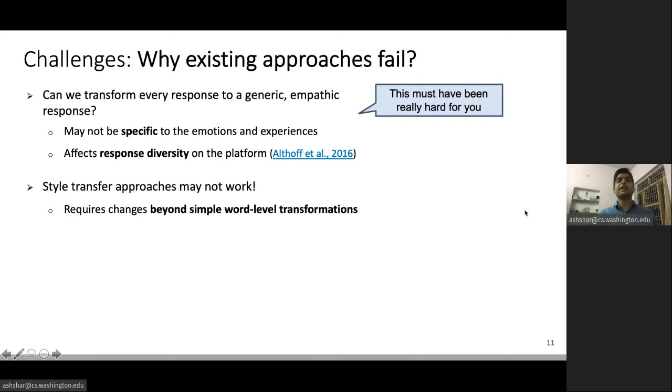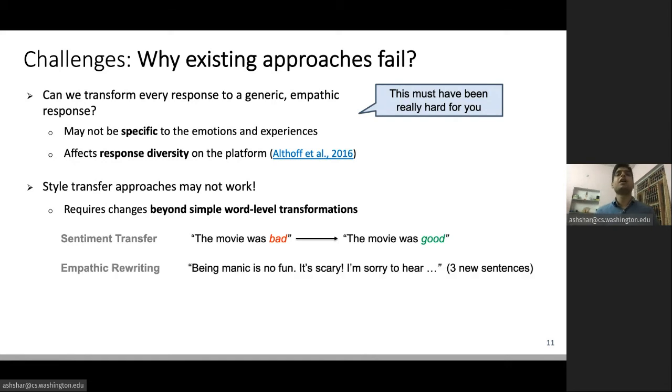Also, empathic rewriting shares surface level similarities with tasks like style transfer or sentiment transfer, but it is significantly different. Often in tasks like style transfer, making simple word level changes suffices. For example in the text 'the movie was bad,' if you just change bad to good, the sentiment changes from negative to positive. But empathic rewriting typically requires multiple new sentences to be added or replaced. Like in the previous example, we needed to add three new sentences. Therefore, existing style transfer approaches may not work and we need to build new methods.